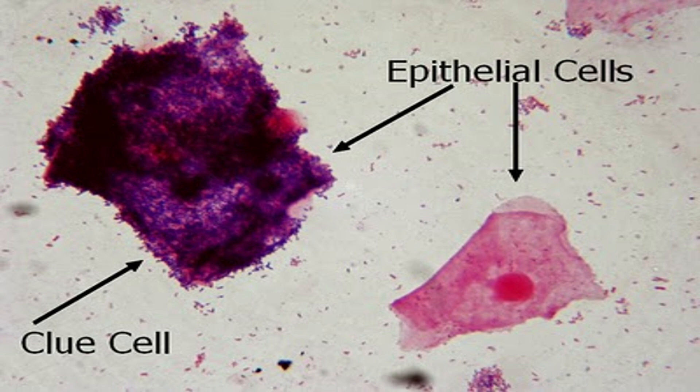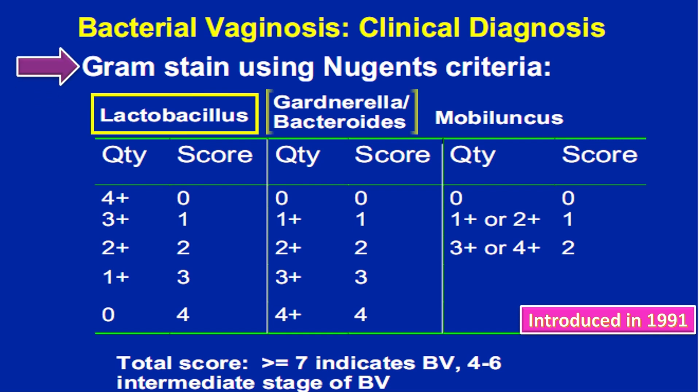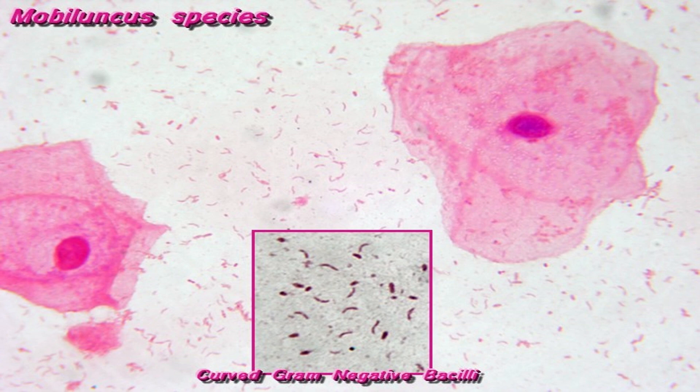Here you can see the epithelial cells and the clue cells. Another test is gram stain using Nugent's criteria. In this criteria, lactobacillus, Gardnerella, Bacteroides, and Mobiluncus are identified and scoring is given according to the number of these bacilli. A total score of more than 7 indicates bacterial vaginosis. A score of 4 to 6 indicates an intermediate stage of bacterial vaginosis. Here you can see Mobiluncus species and curved gram-negative bacilli.